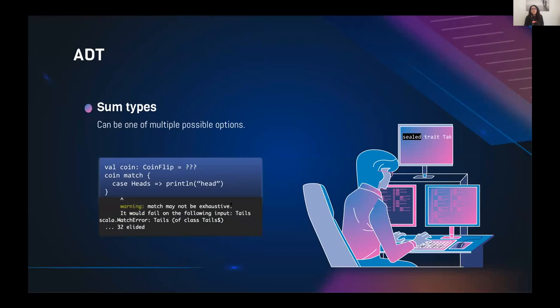A trait is like an interface, and 'sealed' provides exhaustive checking — all members of a sealed trait must be defined in the same source file. This is helpful for pattern matching, because the compiler will check exhaustivity and only needs to look in a single source file.